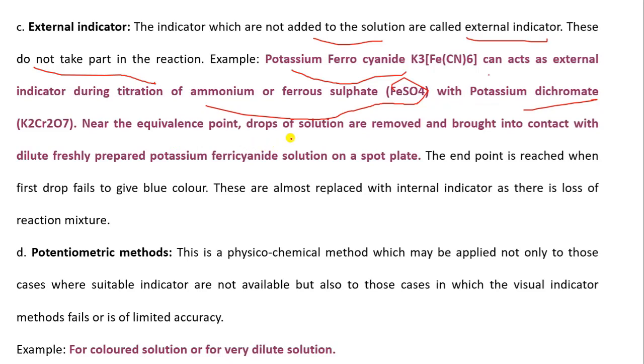Near the equivalence point, drops of solution are removed and brought into contact with dilute freshly prepared potassium ferrocyanide solution on a spot plate. The end point is reached when first drop fails to give blue color. These are almost replaced with internal indicators as there is a loss of reaction mixture. This type of indicator is known as external indicator.